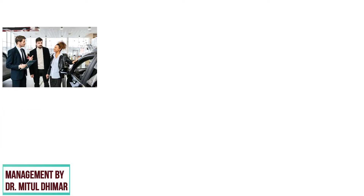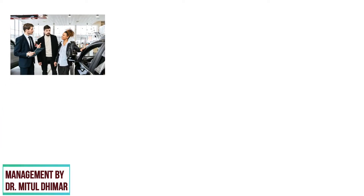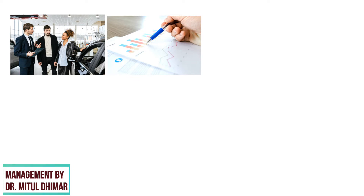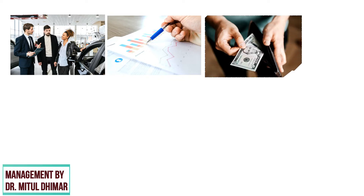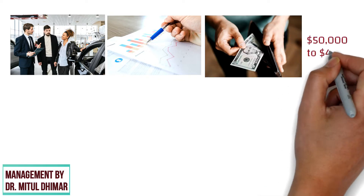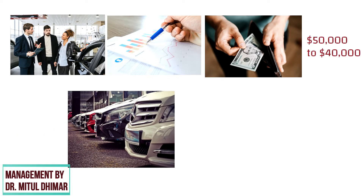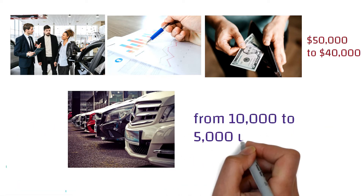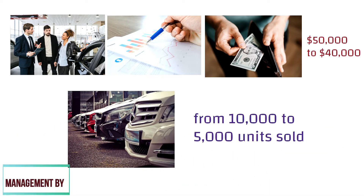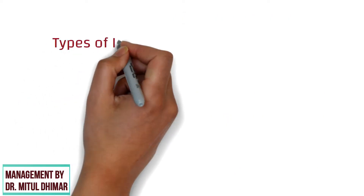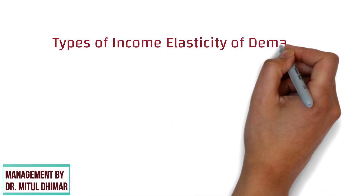Consider a local car dealership that gathers data on changes in demand and consumer income for its cars for a particular year. When the average real income of its customers falls from $50,000 to $40,000, the demand for its cars plummets from 10,000 to 5,000 units sold, all other things unchanged.